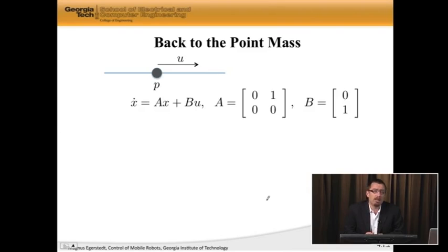State feedback means that we're going to pick u as negative Kx, where K in this particular situation is a one by two matrix with two components, k1 and k2, and those are our gains. We've already seen that k1 is a gain that looks at position, and k2 is a gain that looks at velocity. And by tweaking them, we can get the system to behave well.